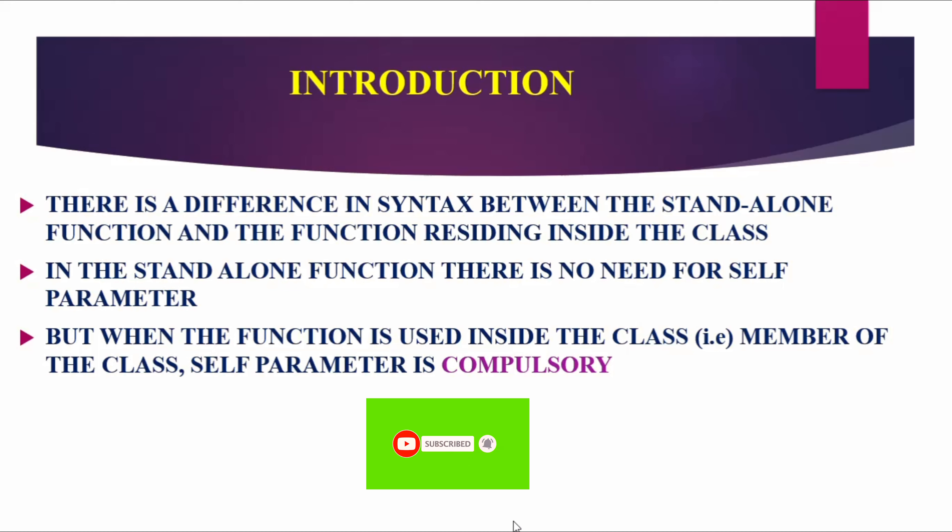In a function inside a class, the self parameter is compulsory — self is the first parameter. For example, if we use a function inside a class and that function has 4 parameters of our own, the total number of parameters is 5, because the first parameter is always self, followed by our own 4 parameters. So 1 plus 4 equals 5.